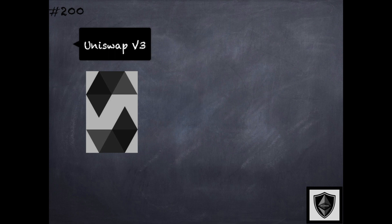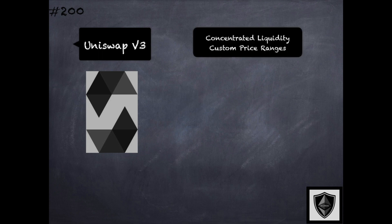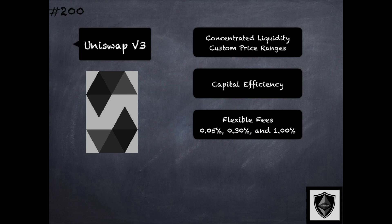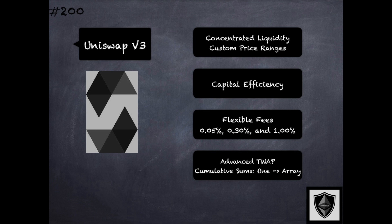Uniswap version 3 introduced concentrated liquidity as a major improvement over version 2. This allows liquidity providers to provide liquidity for a token pair across custom price ranges instead of across the entire constant product curve x times y equals k, bringing a big improvement to capital efficiency. Version 3 also introduces flexible fees across different values, and for oracle support, advanced TWAP support where the cumulative sum is maintained in an array instead of a single variable. This allows smart contracts to query the TWAP on demand for any period within the last nine days.